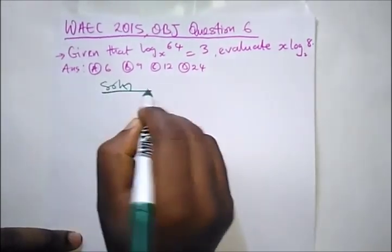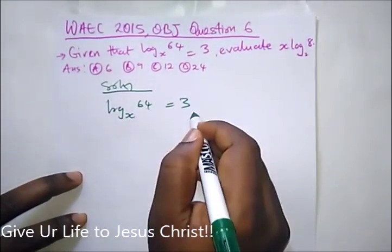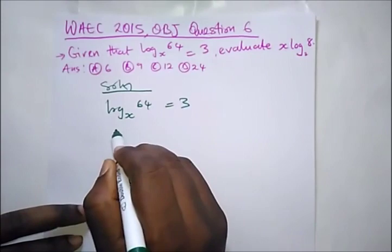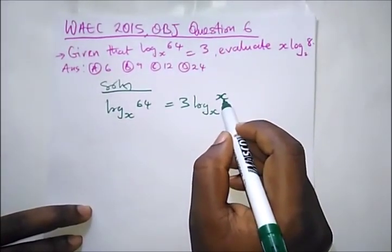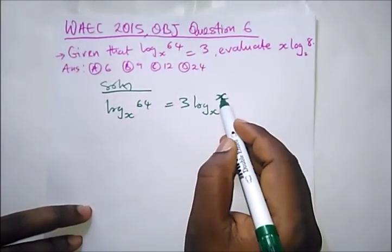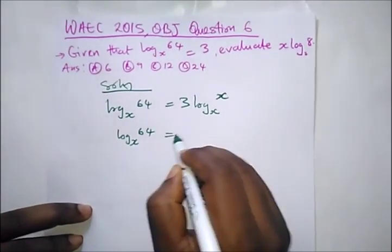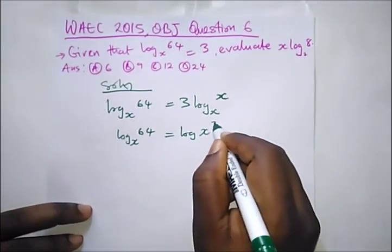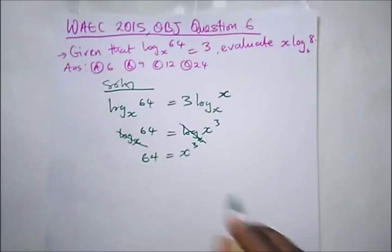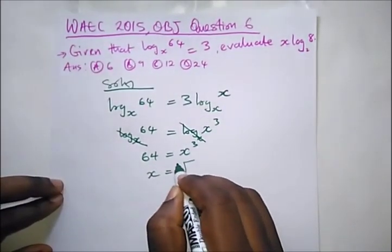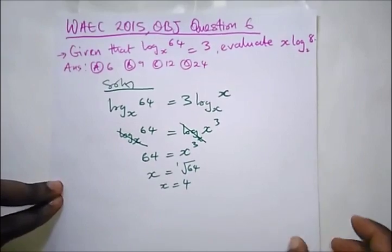So how do we do this? We have log_x(64) = 3. Now, log_x(x) is the same thing as 1, so we raise x to the power of 3. We have log_x(64) = log_x(x^3), so the logs cancel and we get 64 = x^3. Therefore x is the cube root of 64, which gives us 4, because 4 × 4 × 4 = 64.